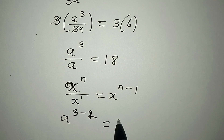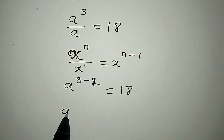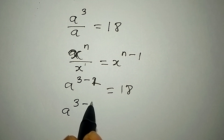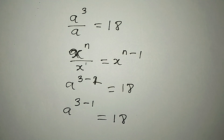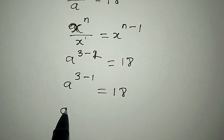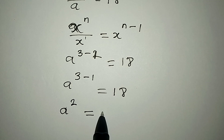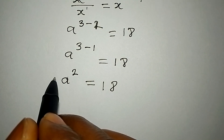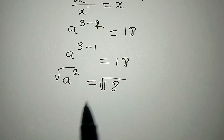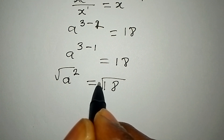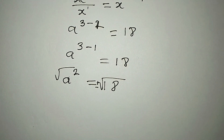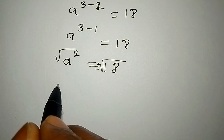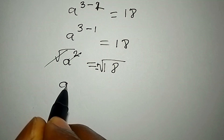This gives us a to the power of 3 minus 1, which equals 18. So we have a squared equals 18. From here, we take the square root of both sides. When taking the square root, we get a positive or negative value on the right.